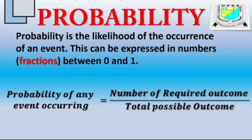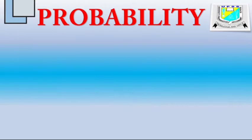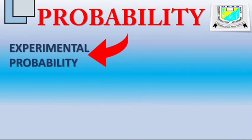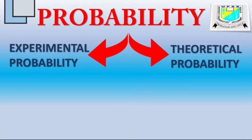Now, we will go to different forms of probability. There are different forms of probability, but for this lesson, we consider only the experimental probability and the theoretical probability.